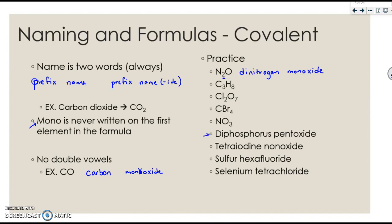Let's jump down here. You're not crossing your charges. The di is on the phosphorus, so you're going to keep the 2 with the P, and the pent is on the oxide, so you're going to keep the 5 on the O. Please pause the video and attempt the rest of these problems.